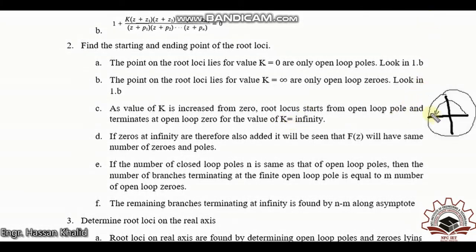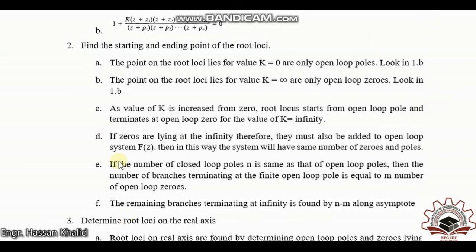Looking at the diagram with the unit circle: starting at the point where k = 0 and extending toward infinity, you move from the open loop pole toward the open loop zero. If the zero is at one location and the pole at another, the locus traces the path between them as gain increases.